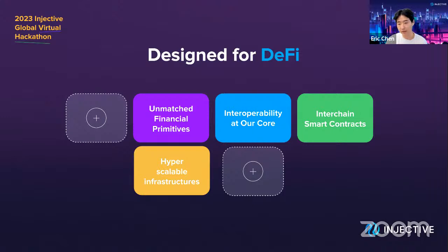We have also added access to new chains such as Polkadot through a bridge to the Moonbeam parachain. With our upcoming integration with Wormhole and the latest bridge solutions, it will also allow us to access a number of EVM and non-EVM chains such as Polygon and Solana for the very first time. To date, the integration with Wormhole has already added 10 more prominent blockchains to the Injective network.